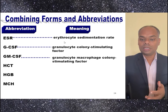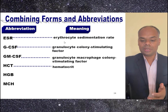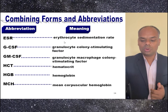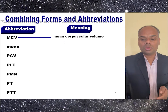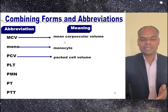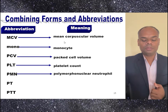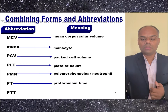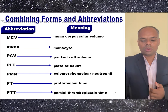GMCSF is granulocyte macrophage colony stimulating factor. HCT is hematocrit. HGB is hemoglobin. MCH means mean corpuscular hemoglobin. MCV means mean corpuscular volume. Mono is monocyte. PCV is packed cell volume. PLT is platelet count. PMN is polymorphonuclear neutrophil. PT is prothrombin time. PTT is partial thromboplastin time.